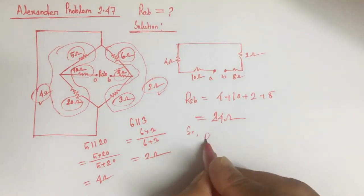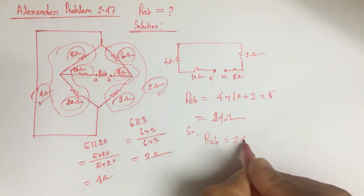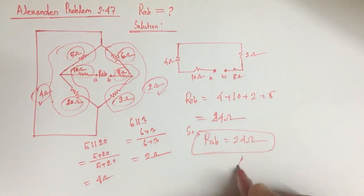So RAB is equal to 24 ohm. This is the answer.